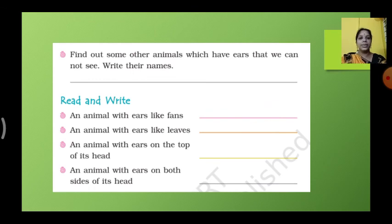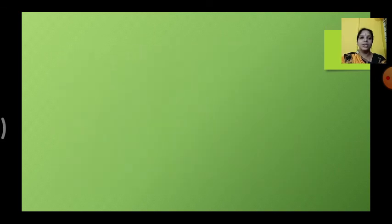Read and write. An animal with ears like fans. Which is that? Elephant. Next, an animal with ears like leaves, that is rabbit. Animal with ears on both sides of the head, that is dog. Okay children, next.